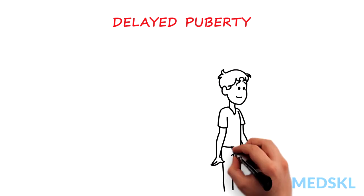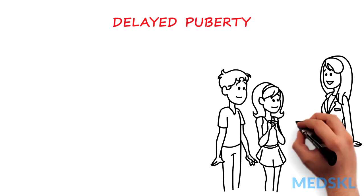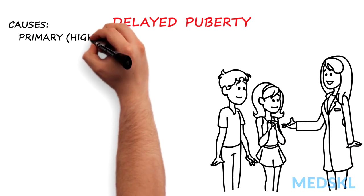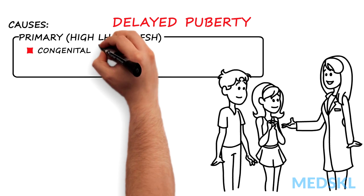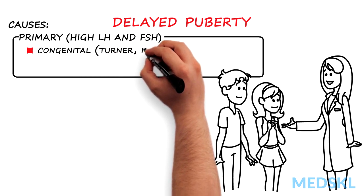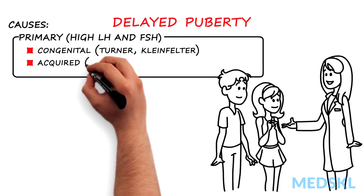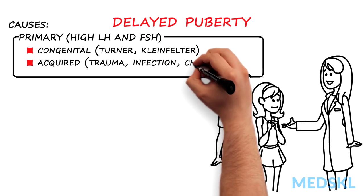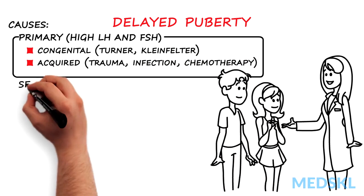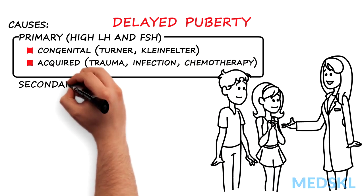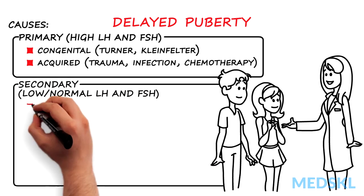Causes of delayed puberty can be divided into primary gonadal disorders, associated with high levels of LH and FSH, either congenital — for example, Turner and Klinefelter syndromes — or acquired causes, for example gonadal trauma, infection, or chemotherapy.